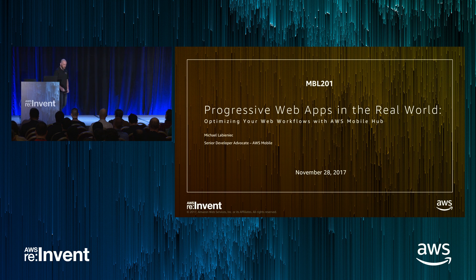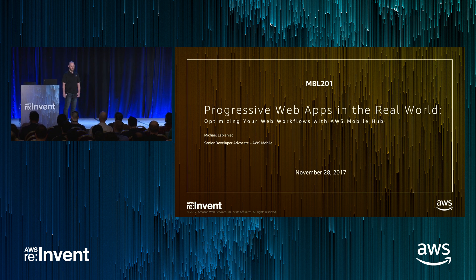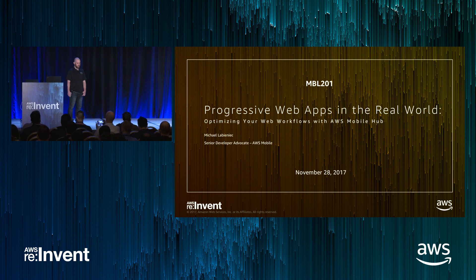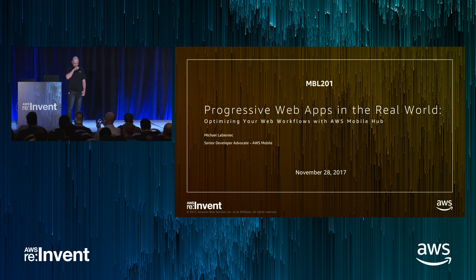Thanks for coming out. My name is Michael Lebenek. I'm a senior developer advocate for AWS and with AWS Mobile, and I'm here to talk about progressive web apps.